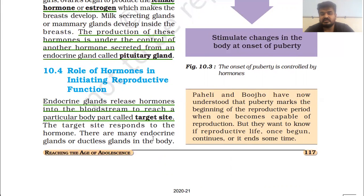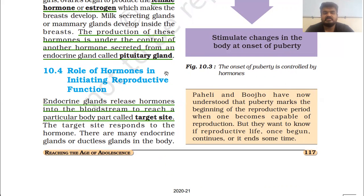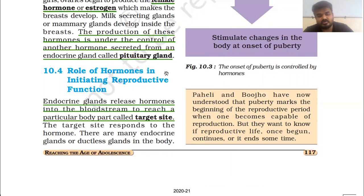Endocrine glands release hormones — so it simply means hormones can be released from endocrine glands only. The production of these hormones is under the control of another hormone secreted from an endocrine gland. The target site responds to the hormone. There are many endocrine glands, also called ductless glands, in the body.